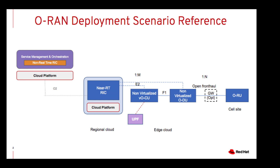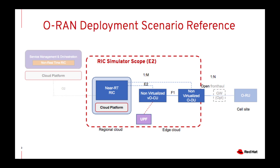These will all be deployed either in the public cloud, regional cloud, edge clouds, or cell sites. For this demonstration, we're going to limit the scope to just a simulator that emulates the E2 interface. The E2 interface can be from the near-realtime RIC out to the CUs or the DUs.